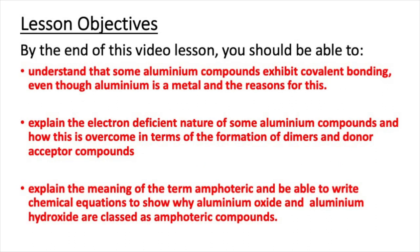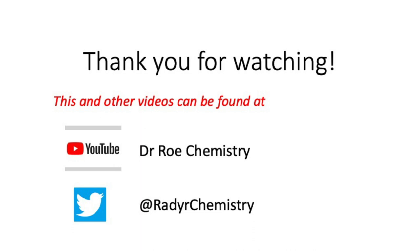That concludes this video lesson. After watching, you should understand that some aluminium compounds exhibit covalent bonding even though aluminium is a metal, be able to explain the electron-deficient nature of some aluminium compounds and how it is overcome through dimers and donor-acceptor compounds, and explain the meaning of amphoteric with chemical equations for aluminium oxide and aluminium hydroxide. Please check out the Dr. Rowe Chemistry YouTube channel for GCSE, AS, and A-level videos, and find us on Twitter at Radachemistry.